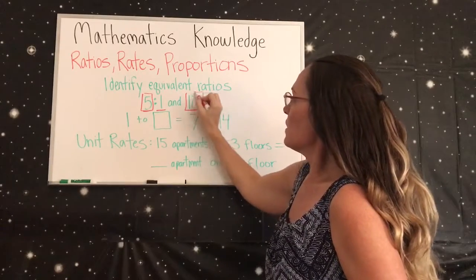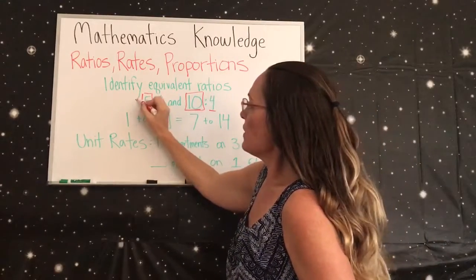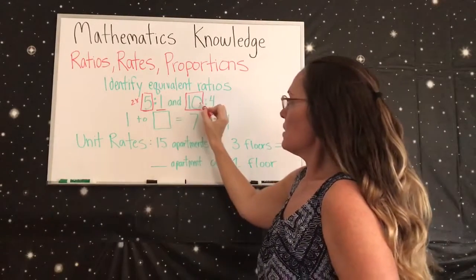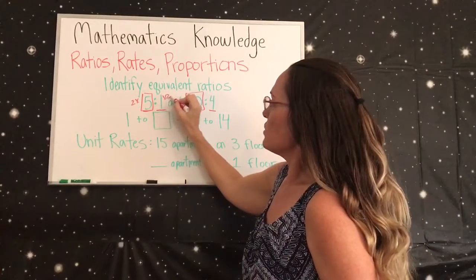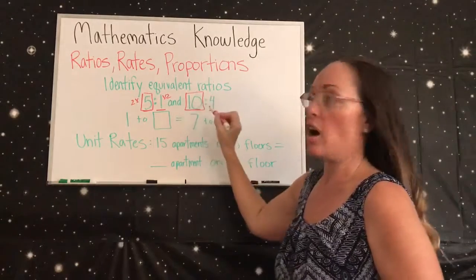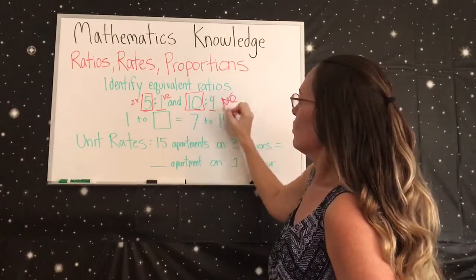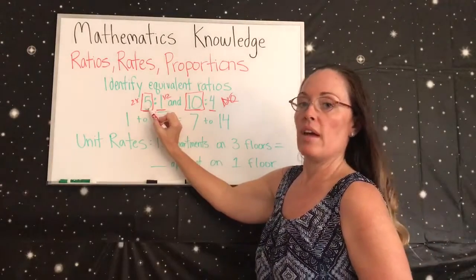Well, if they were equivalent, then that means you could do 5 times 2, that would get the 10. So then you do 1 times 2, and then that would mean that this was 2. So these are not equivalent, so no.